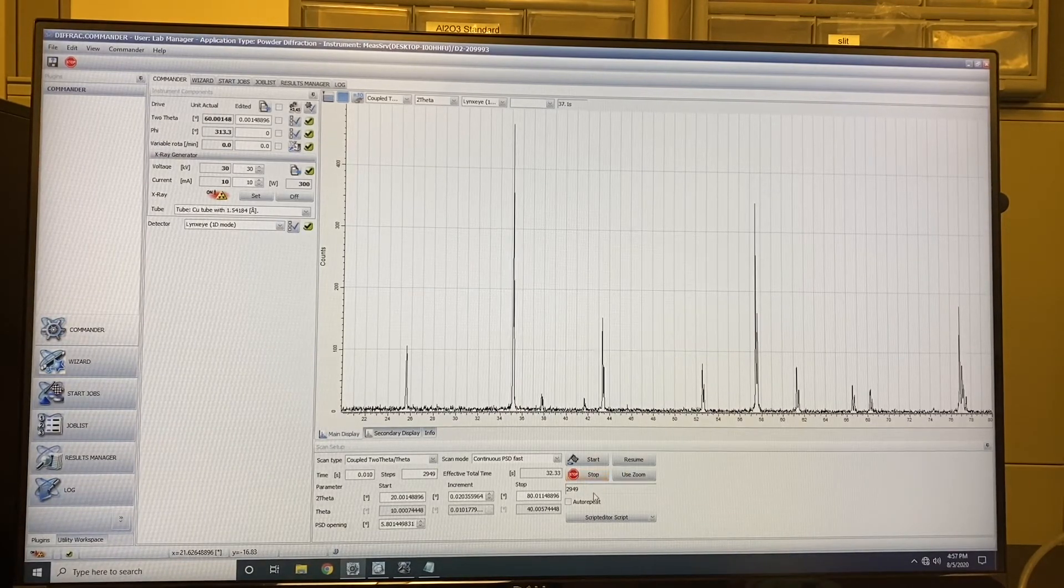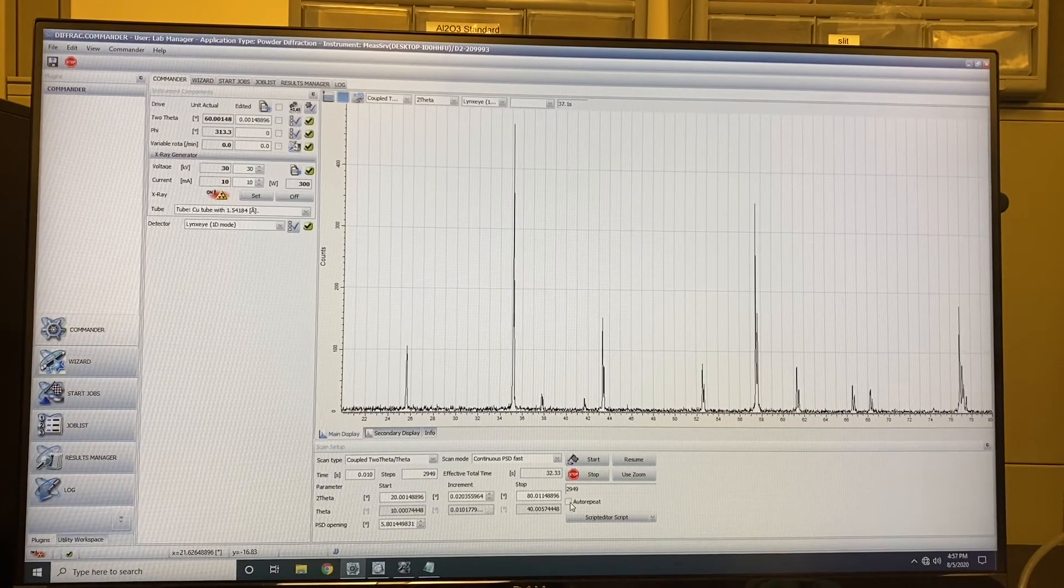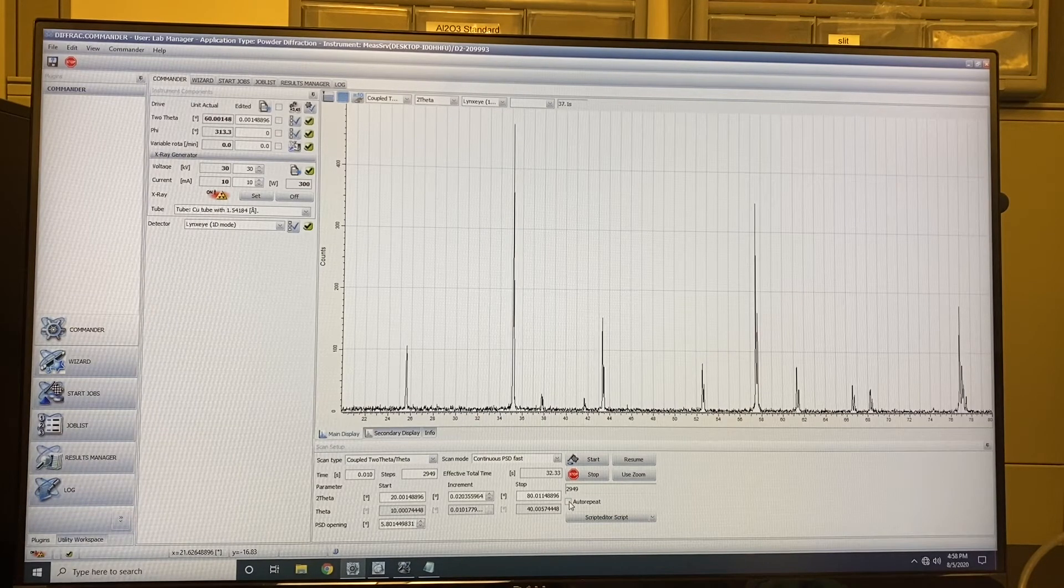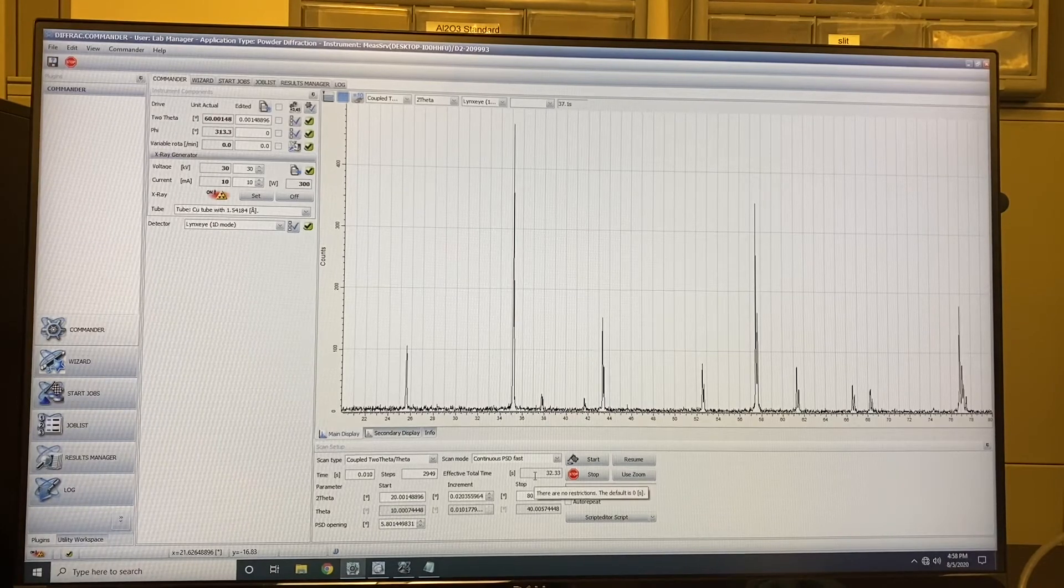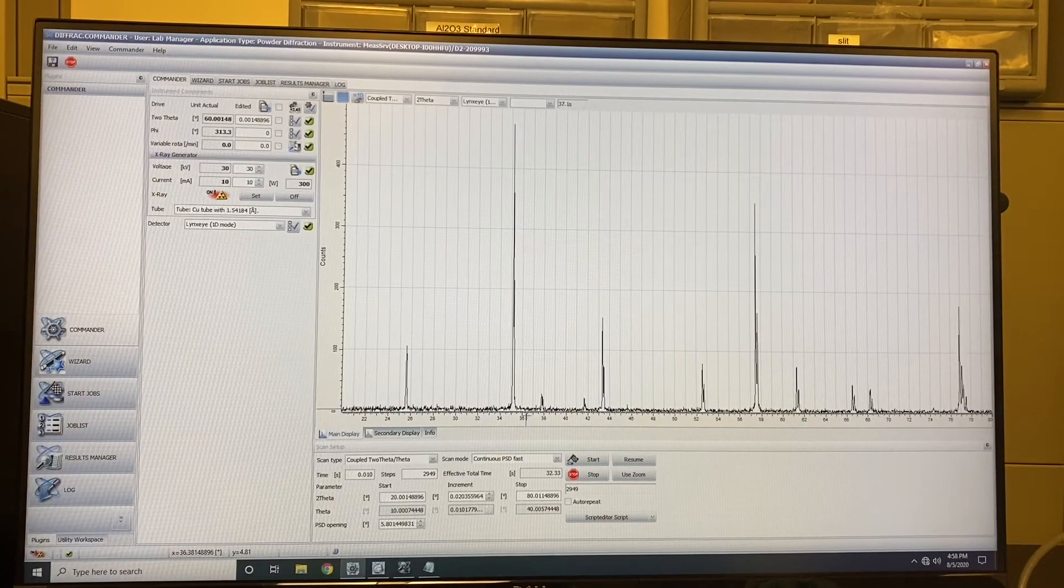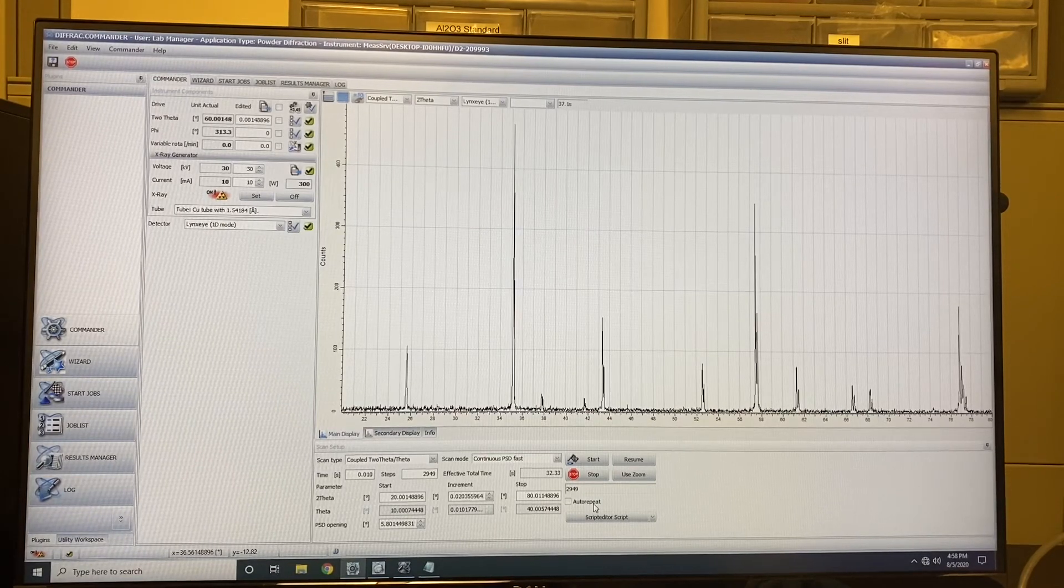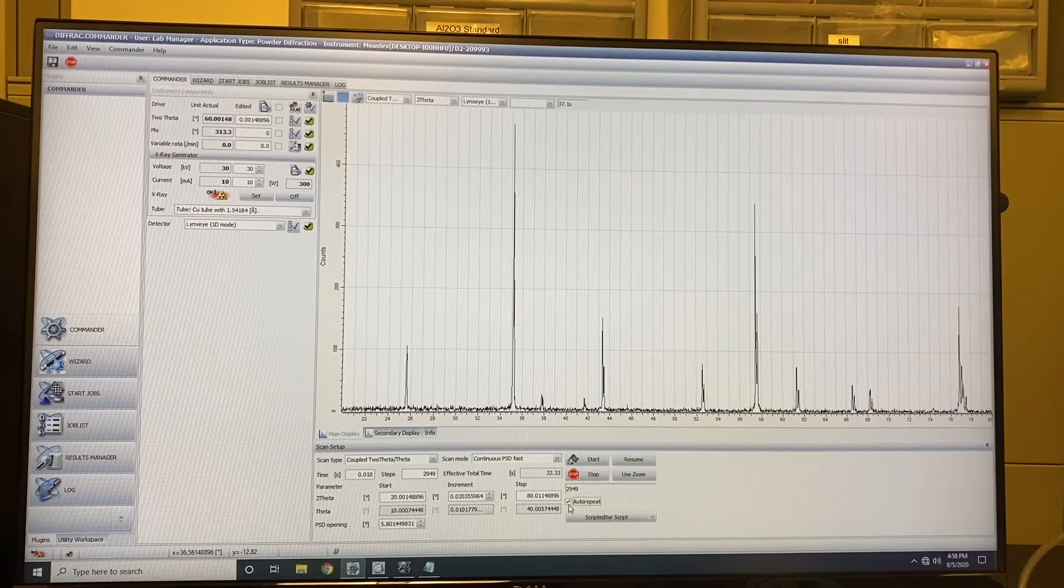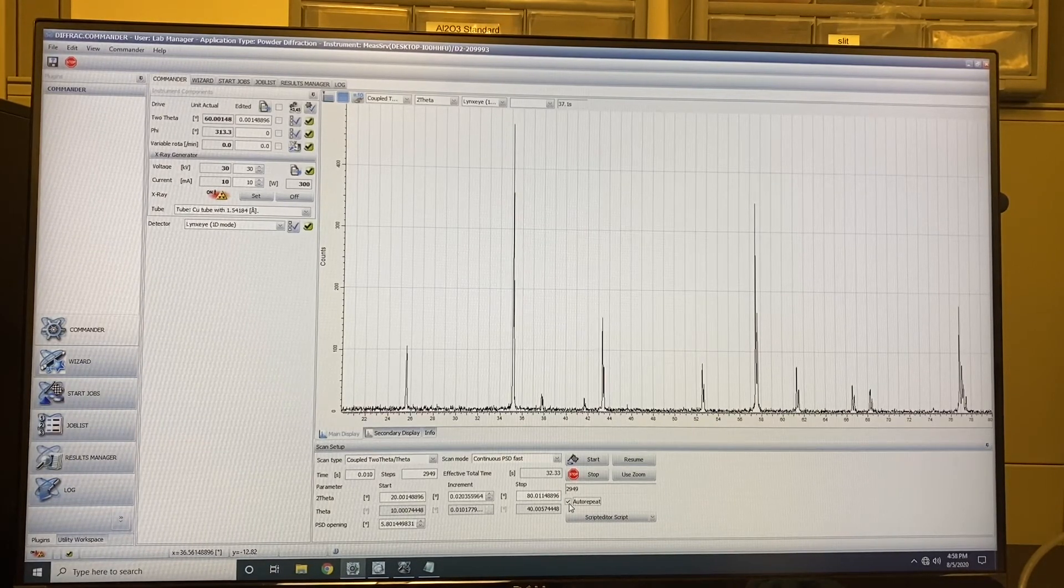We also have another option. Here you can see it's auto-repeat. Auto-repeat means if you are not familiar with your sample and you can do a fast scan. And if you think the fast scan is good, then you can check the auto-repeat and you will go on a long measurement. Just click and check. If you think the measurement is not good, you can uncheck here.